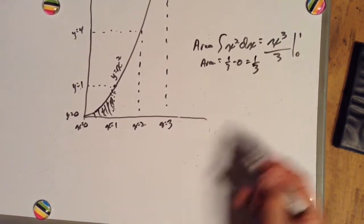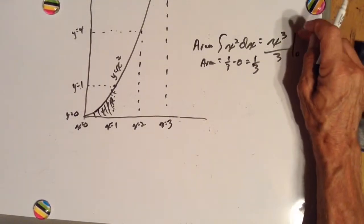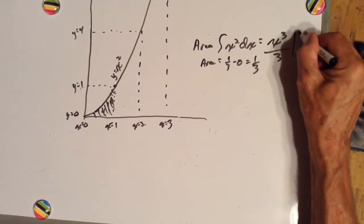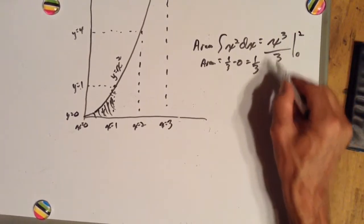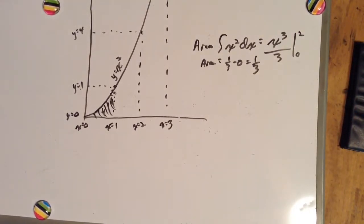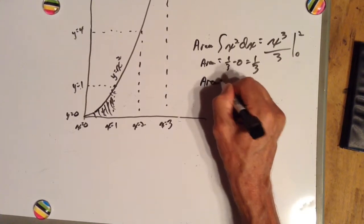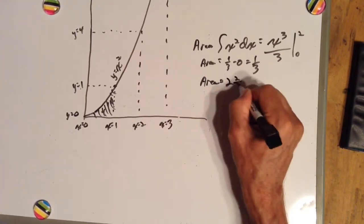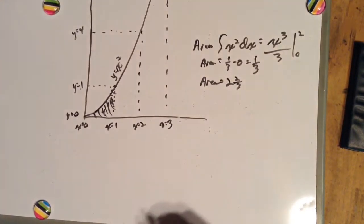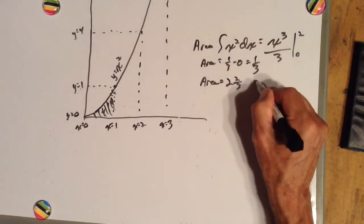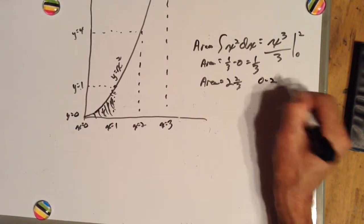What if x is 2? Let's make our limits of integration 0 to 2. We plug 2 in for our x: 2 times 2 times 2 is 8. So 8 over 3 minus 0, which gives us an area of 2 and 2 thirds, or 8 over 3. That's from 0 to 2.